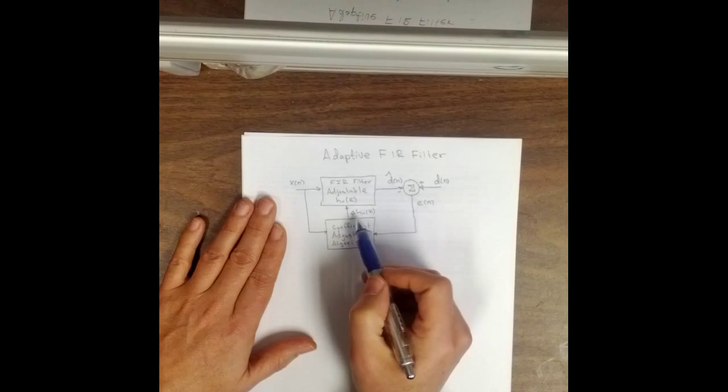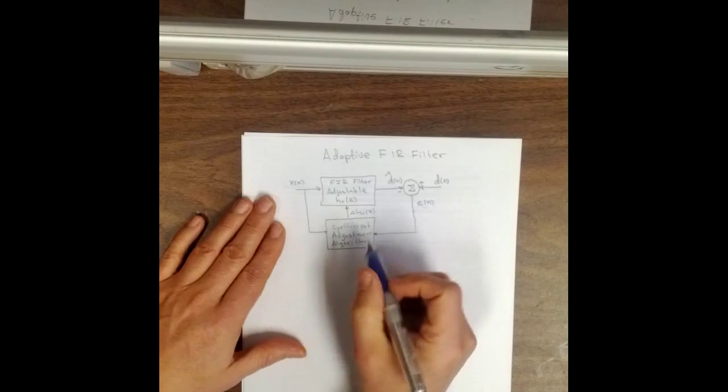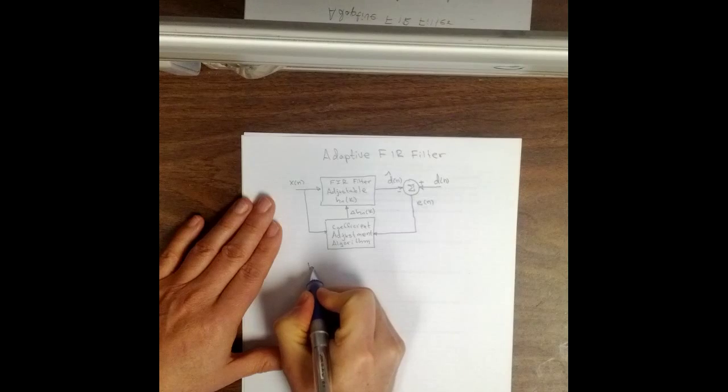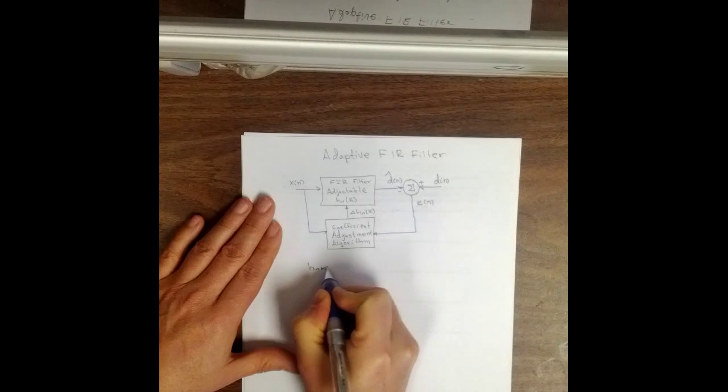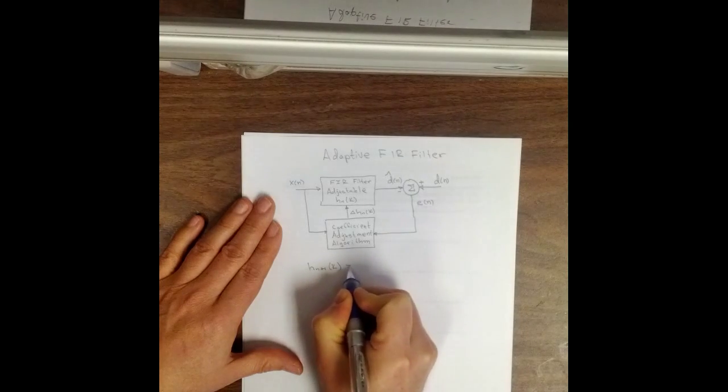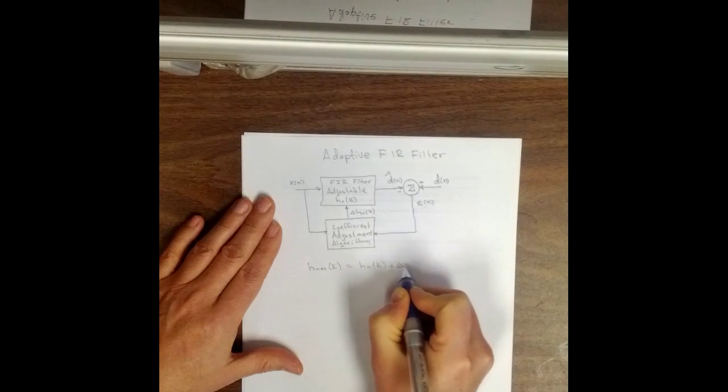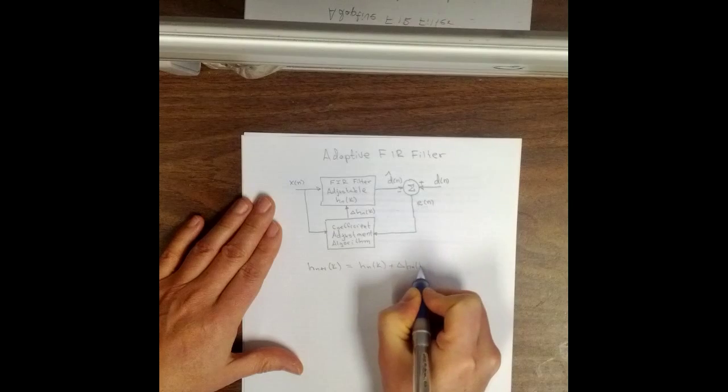This change is delta h sub n of k. So the next filter coefficients, h sub n plus 1 of k will equal h sub n of k plus delta h sub n of k.